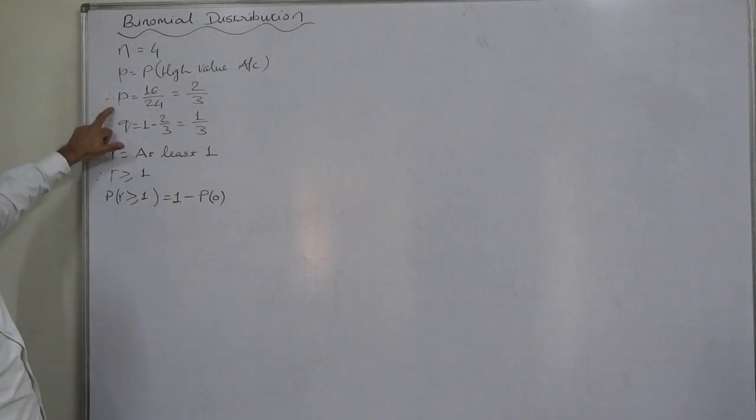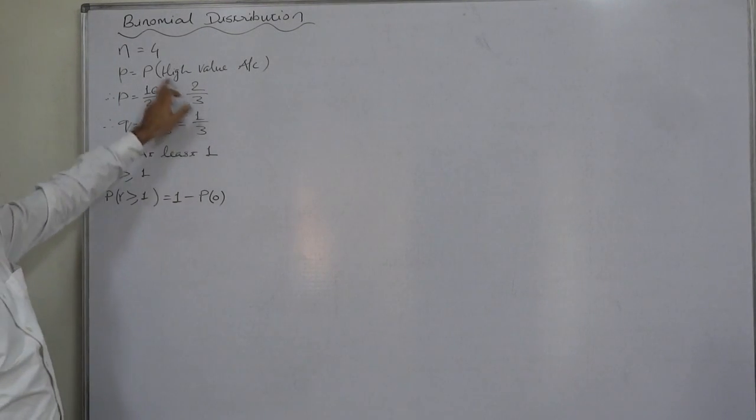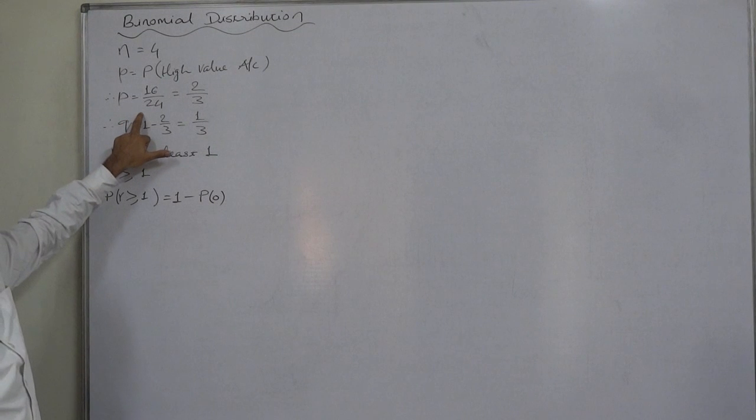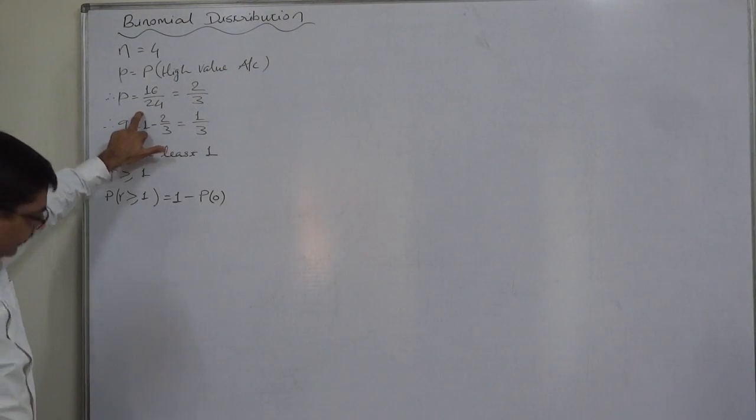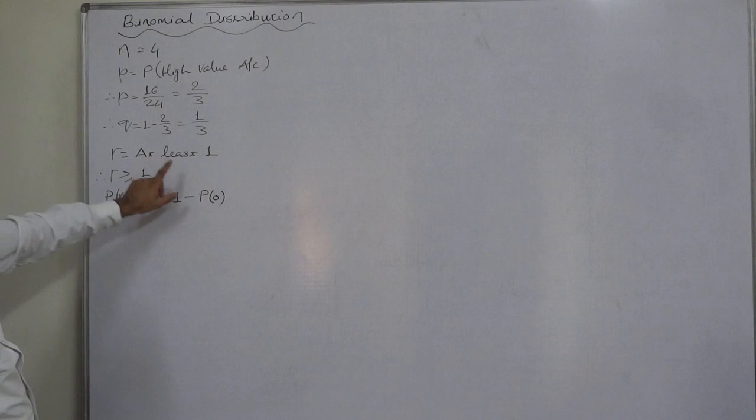And n is 4, p is 2/3, q is 1/3. 2/3 is 16/24, probability of highly valued customers in the entire population. r is at least 1, that is greater than or equal to 1.